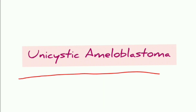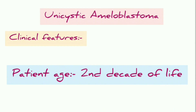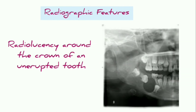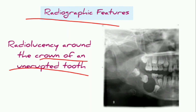Moving on to unicystic ameloblastoma: the clinical features are similar to multicystic, except the patient age is in the second decade of life. Radiographically, radiolucency around the crown of an unerupted tooth is seen.